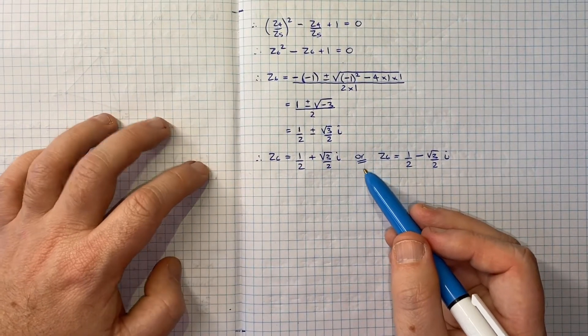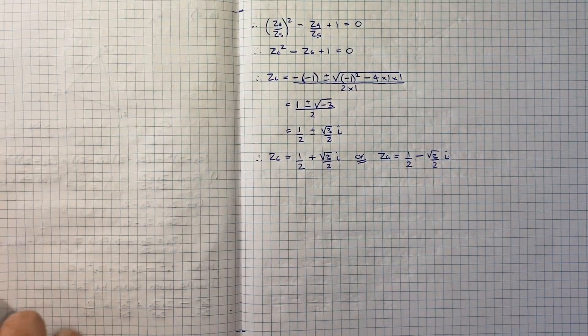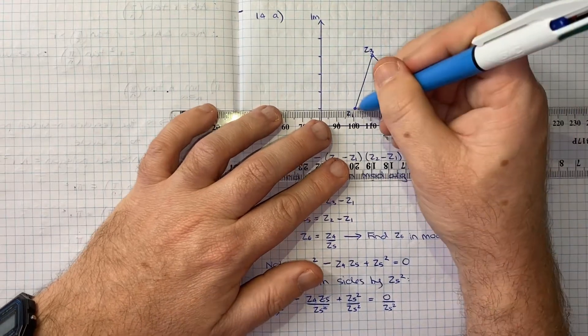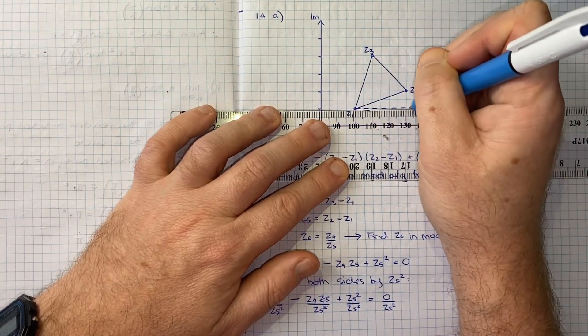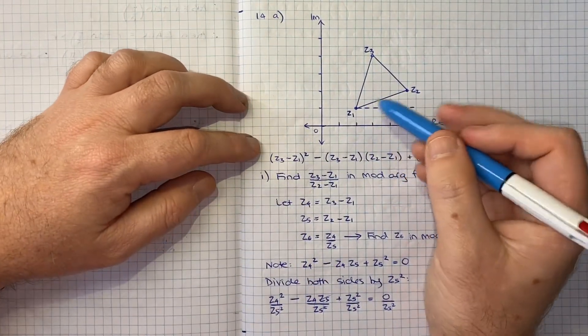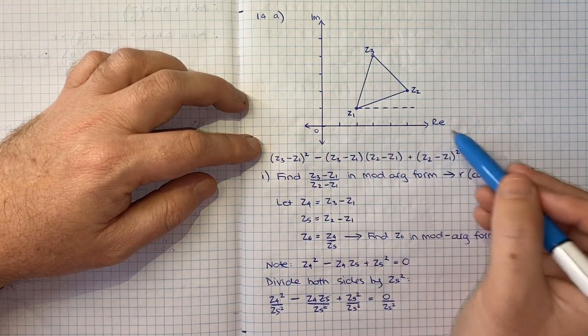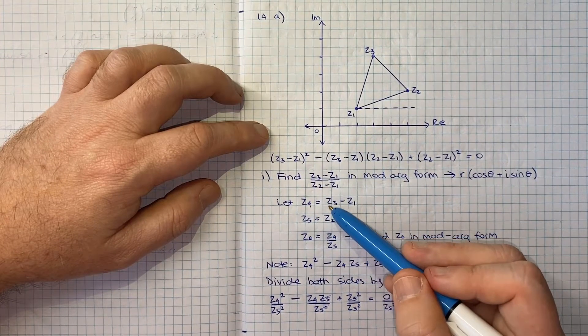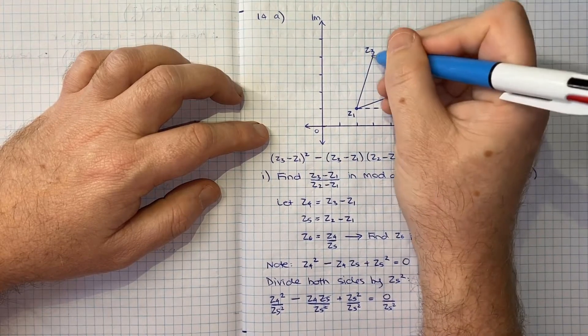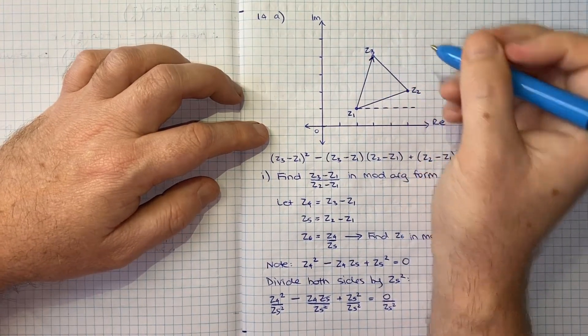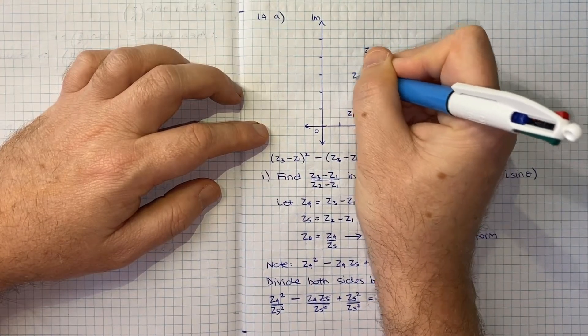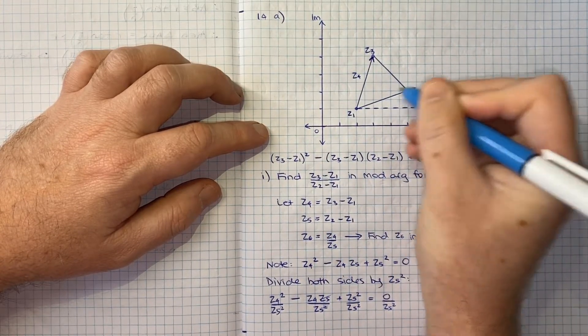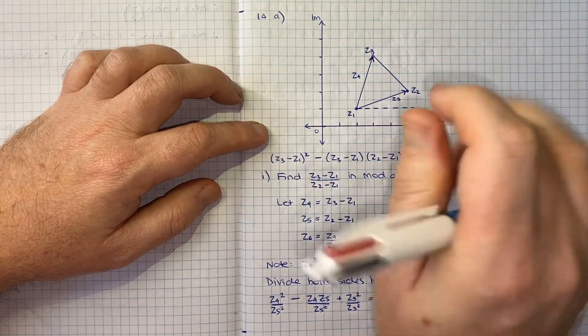I think at this point we can maybe go back to our diagram and think about the arguments of what we're dealing with. I might just draw a line parallel to the real axis, because the argument of a complex number is the angle it makes with the horizontal. In terms of what we're dealing with, Z4 in our case is Z3 minus Z1, so it's really this vector here. This is essentially Z4, and Z5 is Z2 minus Z1, so this vector here you could think about as Z5.